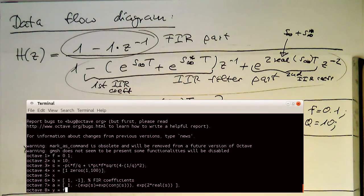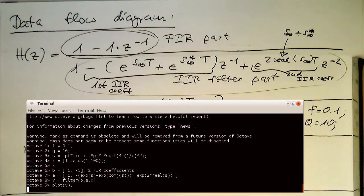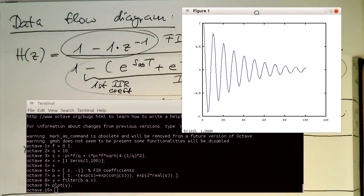And now what we can do is we can use our filter command, FIR coefficient, IIR coefficients, and our test input vector here. So now we should have in Y our impulse response of the filter. And this is indeed the case here. So now we've got the impulse response here of our IIR filter here. And as expected here, this is a damped oscillation, which is dependent on this Q factor here.